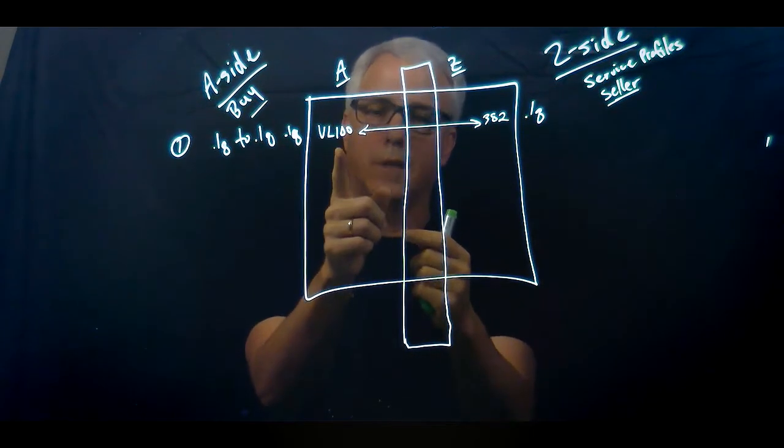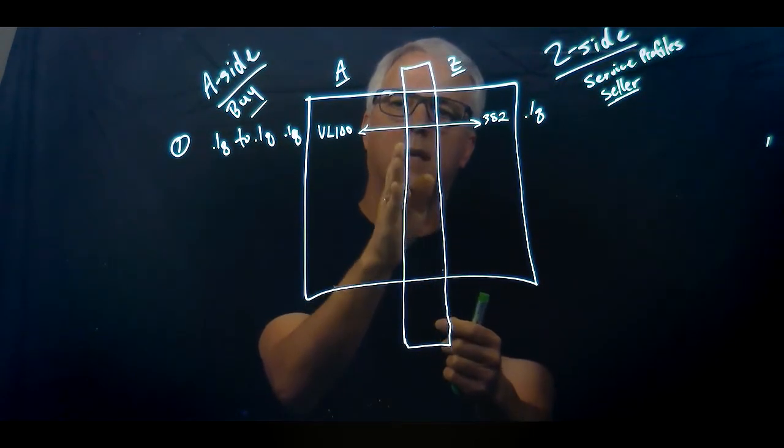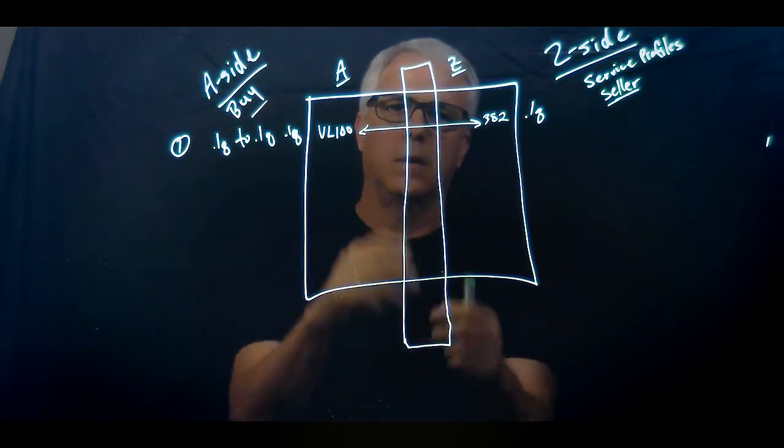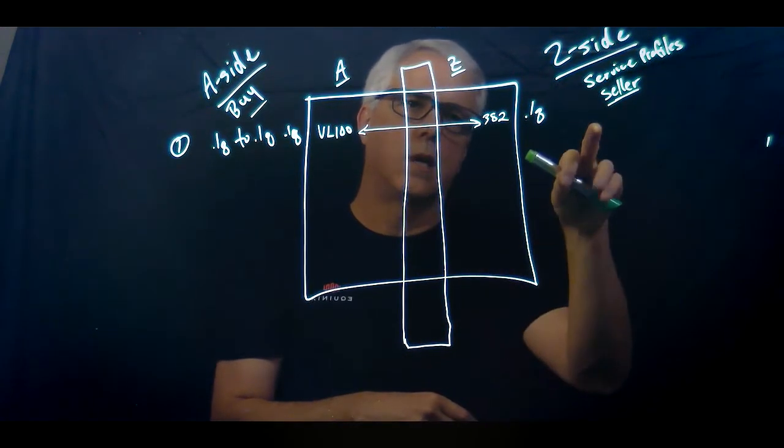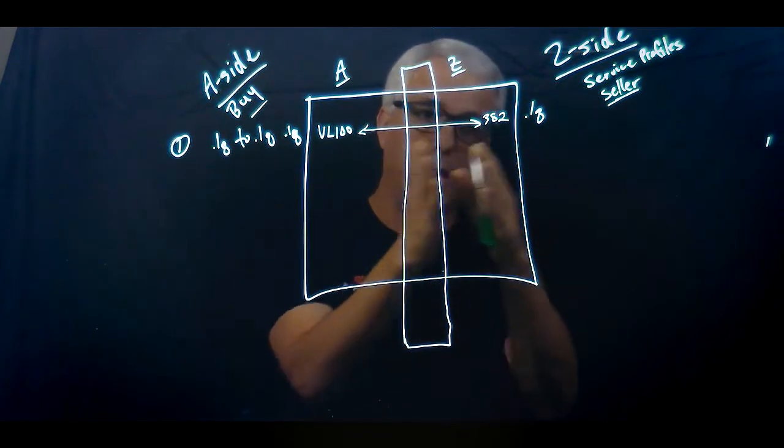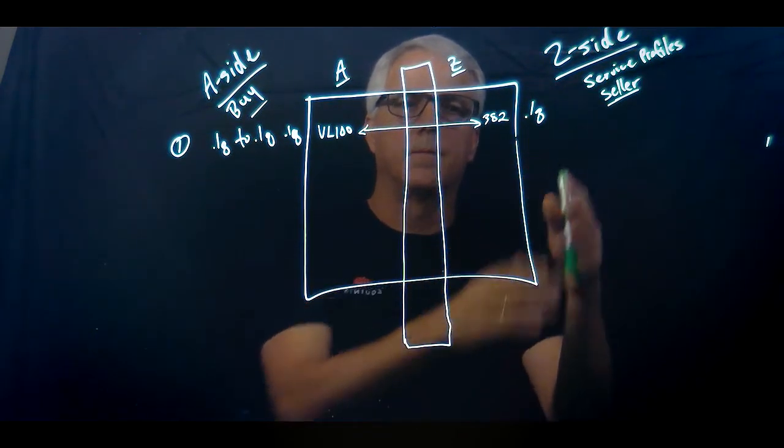So VLAN 100 hits the ECX switch. The ECX switch pops off VLAN 100 and adds VLAN 382, and then it goes out on that side to the Z side of the connection for AWS.